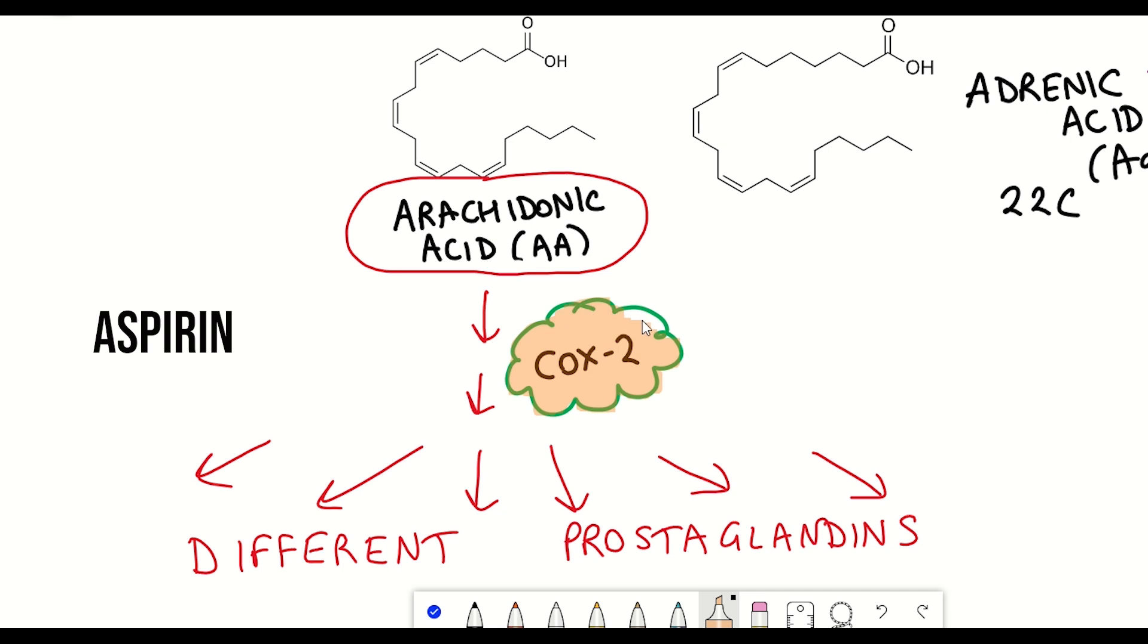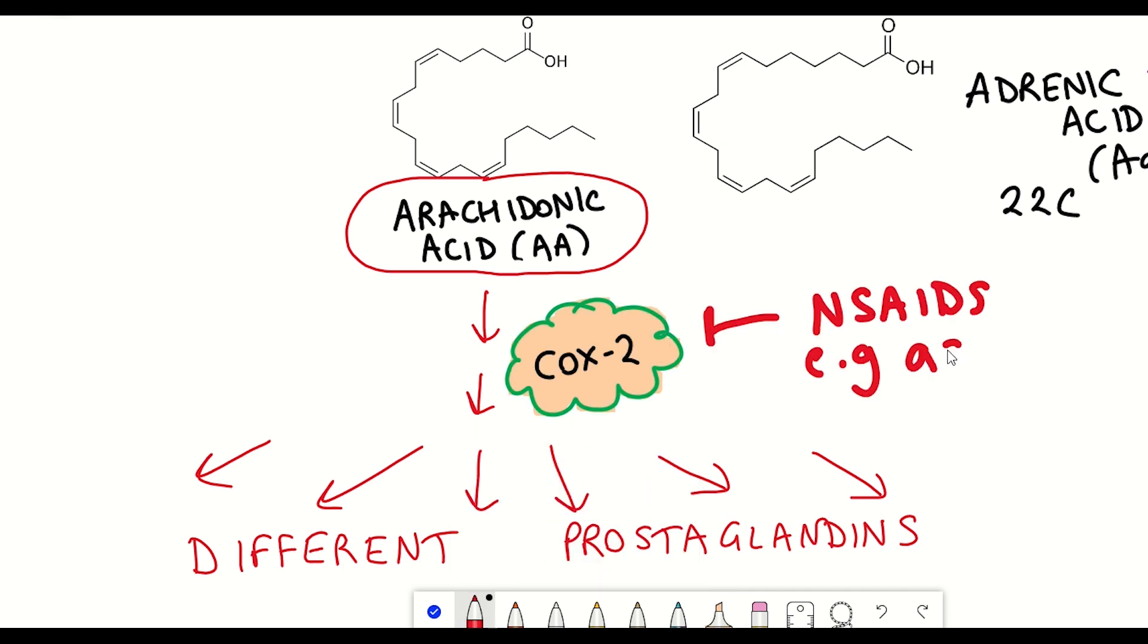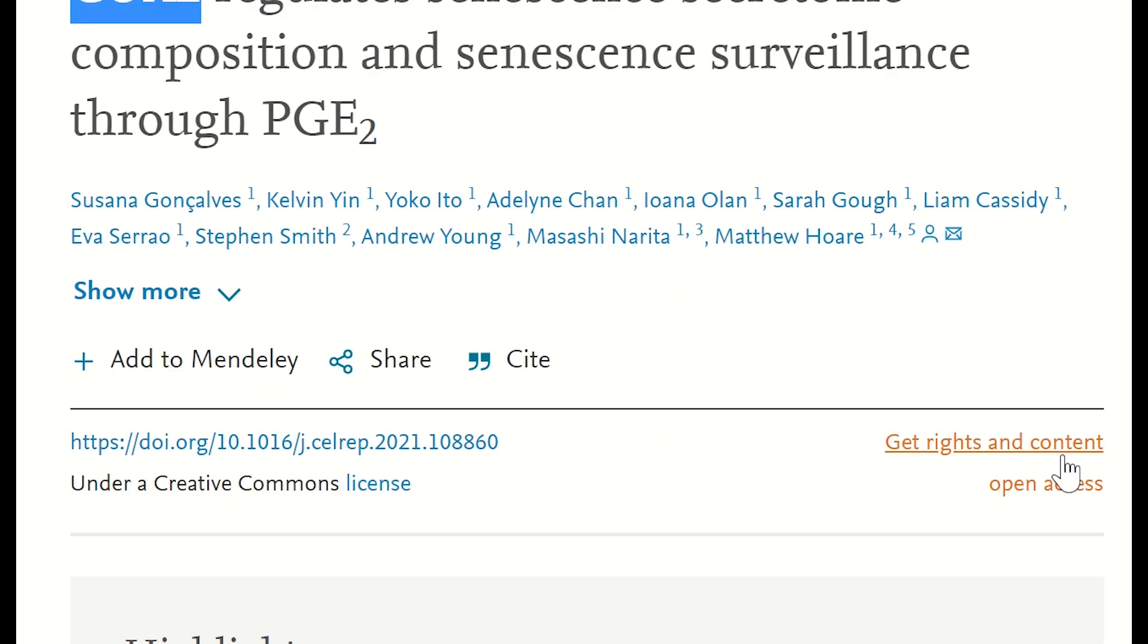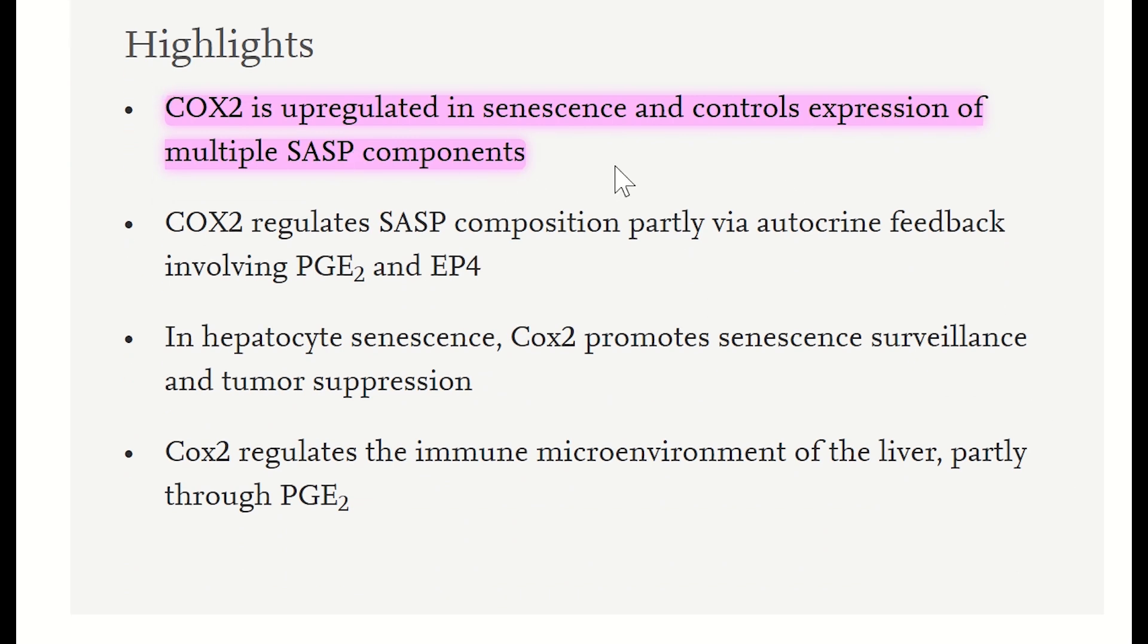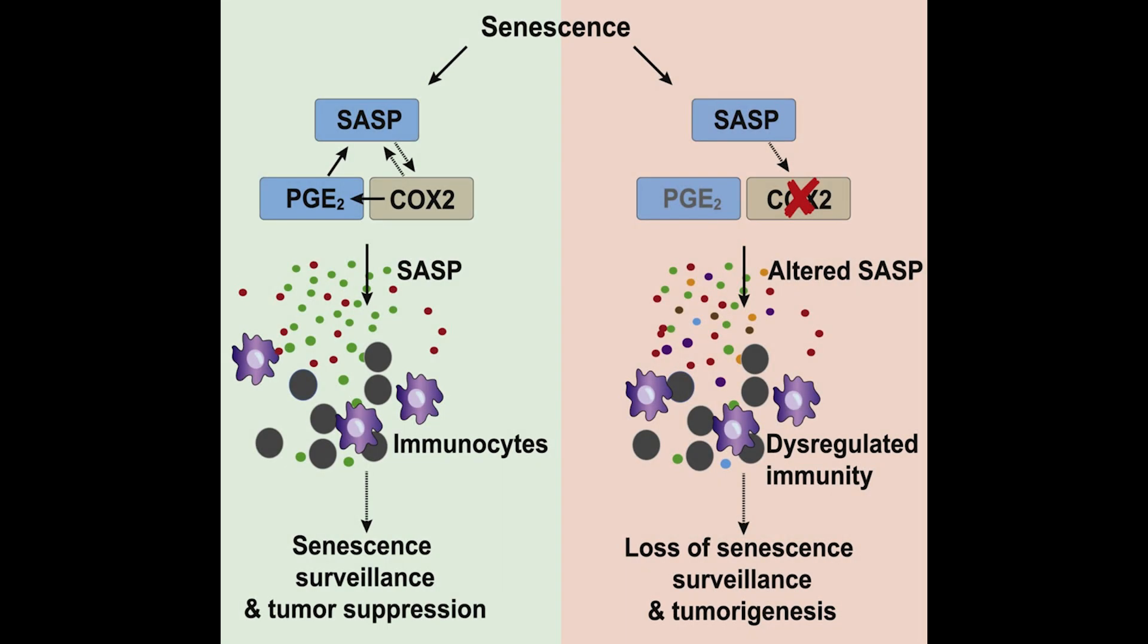And one of the genes that encodes the protein that gets inhibited by aspirin, known as COX-2, standing for cyclooxygenase 2, was actually shown in another recent study to be involved in the senescence process, whereby COX-2 was observed to be upregulated in senescence and control the expression of multiple SASP components. And this activity was important for mediating so-called senescent surveillance, whereby the immune cells can get recruited in to clear the senescent cells, in this paper described in liver tissue.